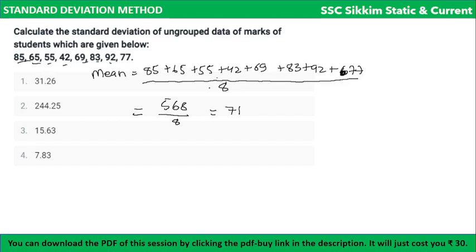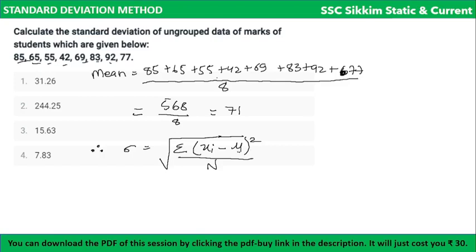We got mean = 71. Now apply standard deviation formula: sigma = square root of summation of (xi − μ)² divided by n. First value: 85 − 71 = 14, 14² = 196. Second: 65 − 71 = −6, (−6)² = 36. Third: 55 − 71 = −16, (−16)² = 256. Fourth: 42 − 71 = −29, (−29)² = 841.